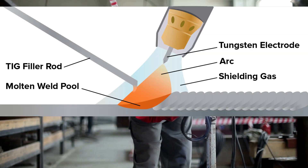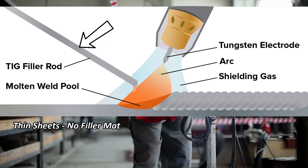The next equipment is the filler material. Mostly for welding thin sheets, no filler material is used. But for thick welds, filler material is used in the form of rods which are directly fed into the weld zone manually.